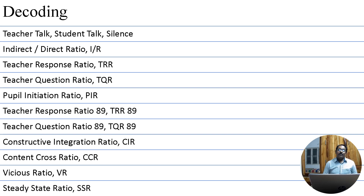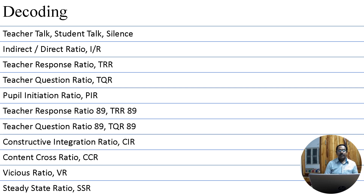Welcome back. We have observed a class that was in 10 categories, which we made into numerals — we call this coding. The coding has to be decoded so that we can understand how the teacher has taught in that particular class. This can be done in these 11 ways: teacher talk, student talk, silence, indirect-to-direct ratio (I/D), teacher response ratio (TRR), teacher question ratio (TQR), pupil initiation ratio (PAR), TRR-89, TQR-89, constructive integration ratio (CIR), content cross ratio (CCR), and viscous ratio (VR).